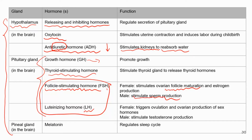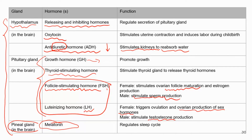Luteinizing hormone stimulates the production of sex hormones — in females that's mainly estrogen but also progesterone; in males that's testosterone. Finally, the pineal gland, which is a small structure in the brain, secretes melatonin. If you've never seen it before, next time you're at a pharmacy look for sleep aid supplements — the active ingredient will say melatonin.